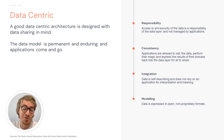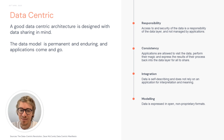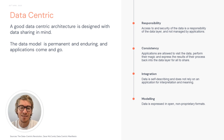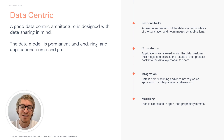What do we understand under the term 'data centric'? A good definition: a good data-centric architecture is designed with data sharing in mind. The data model is permanent and enduring, and the applications come and go. That's different from an application-centric mindset where you always start by building your own data model in your applications and then see how to connect to other applications. In contrast, here we have one central place where the responsibility for accessing the data and for data security lays in the data layer itself, not in each and every application.